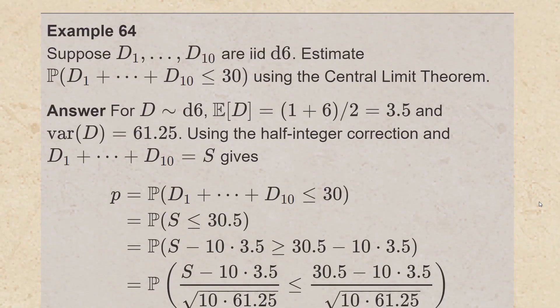For example, suppose that d1 up through d10 are iid d6s — that is, fair rolls of a six-sided die. Then we're going to estimate the probability that d1 plus d2 up through d sub 10 are at most 30 using the central limit theorem. For a fair six-sided die roll, the average value of d is going to be the sum of the minimum and maximum values 1 and 6 divided by 2, which gives 3.5. You can also work out the variance, and that's going to be 35/6 approximately 61.25. So using the half integer correction, we're going to say that the probability that d1 plus d2 up through d10 being at most 30 is actually equal to the probability that s the sum is at most 30.5.